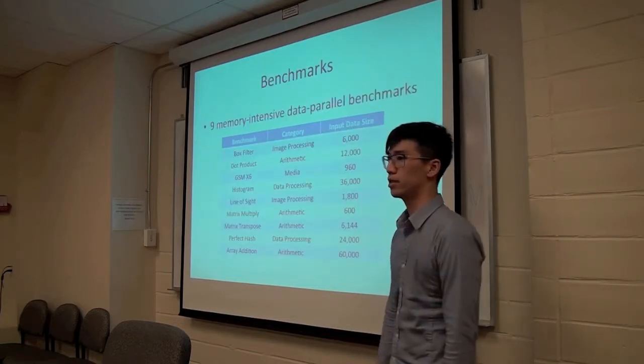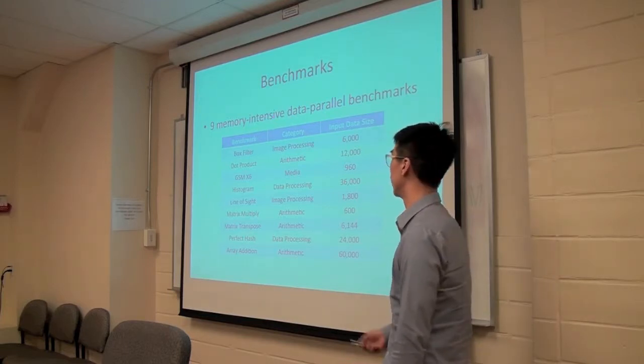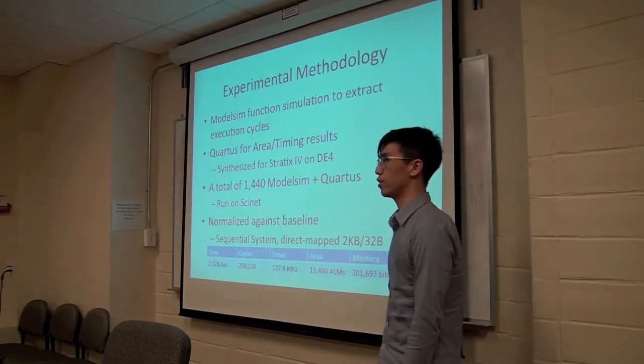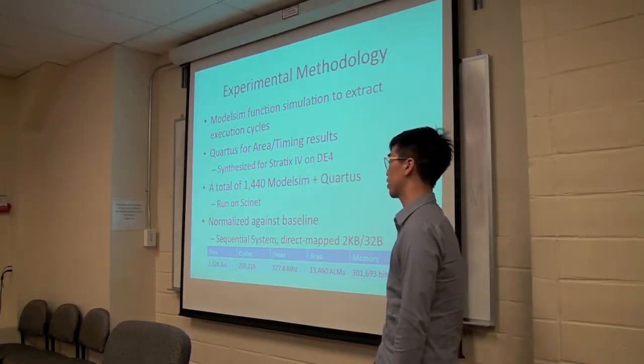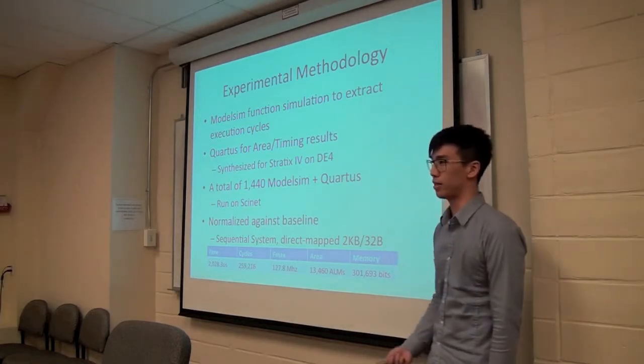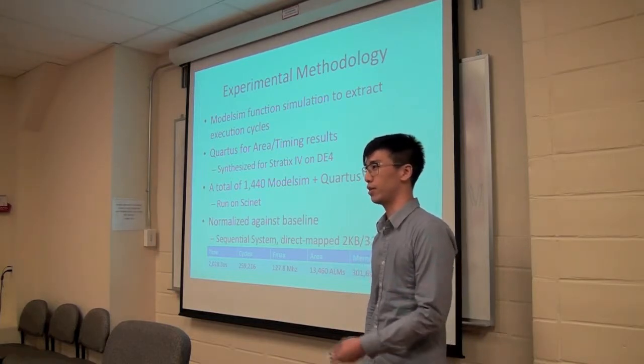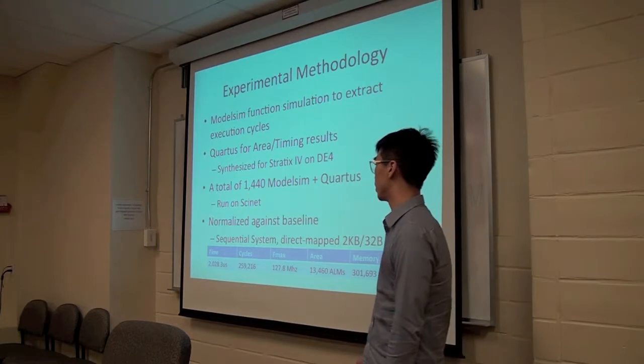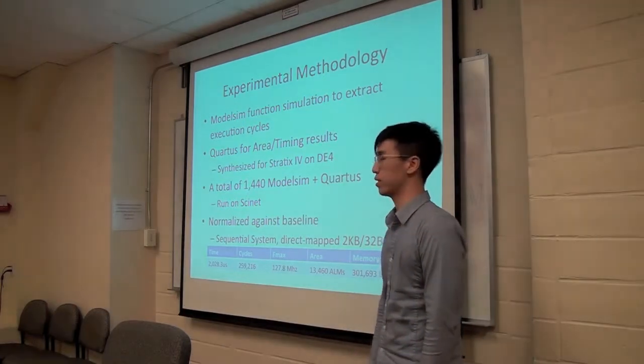We used nine memory-intensive data parallel benchmarks. And by data parallel, I mean that no two accelerators ever write to the same memory location, but they can read from the same memory location. And each of these are from a variety of categories with different input data sizes. We used ModelSim functional simulation to extract the total execution cycles and Quartus for area and timing results. This was synthesized for the Stratix IV on the DE4. And with all of the architectures and cache configurations, it took a total of 1440 ModelSim simulations plus Quartus synthesis, which probably would have taken until the end of my PhD if I had run it on my computer. But we have access to an amazing piece of machine called SciNet. For those of you who don't know, it's a supercomputer that is maintained by U of T. I believe it's the top 61 in the world right now. And all the results that I'll be showing in the next pages are normalized against the baseline system, which is a sequential system running a single accelerator with a 2-kilobyte cache, 32-byte line size, and used a direct map cache. And the results for the baseline system are shown in the table.